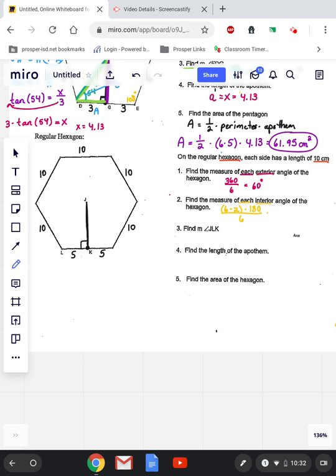So 6 minus 2, times 180, divided by 6, would be 120 degrees. So every angle inside of the hexagon is 120 degrees.